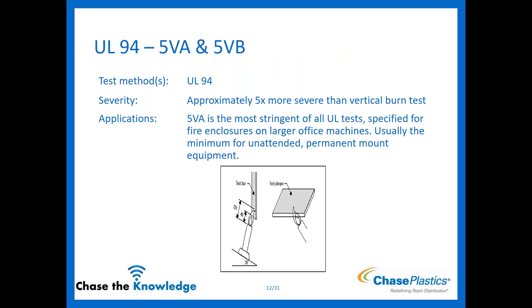Then your 5VA — these are approximately five times more stringent than your vertical burn test. It's a very stringent test: you apply the flame directly underneath a test plaque. The biggest difference between 5VA and 5VB is that 5VA does not allow burn-through, you cannot have the flame burn through the plaque, whereas 5VB does allow burn-through. An easy way to remember: B allows burn-through. It is typically specified for fire enclosures in larger office machines, and is the minimum for unattended permanent mount equipment.